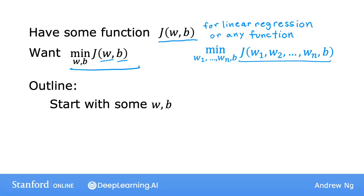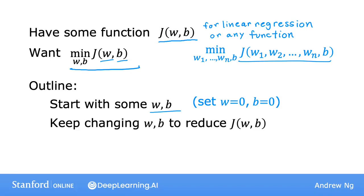A common choice is to set them both to zero. So, for example, you can set w to zero and b to zero as the initial guess. With the gradient descent algorithm, what you're going to do is you'll keep on changing the parameters w and b a bit every time.